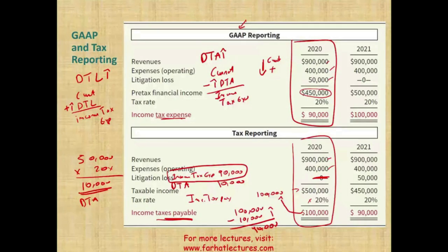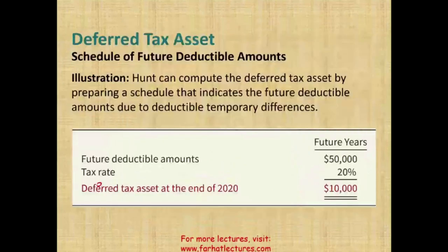Key formulas to remember: if the deferred tax asset increased, income tax expense equals current taxes minus the increase in DTA. If the deferred tax liability increased, income tax expense equals current taxes plus the increase in DTL. And the opposite is true for decreases.